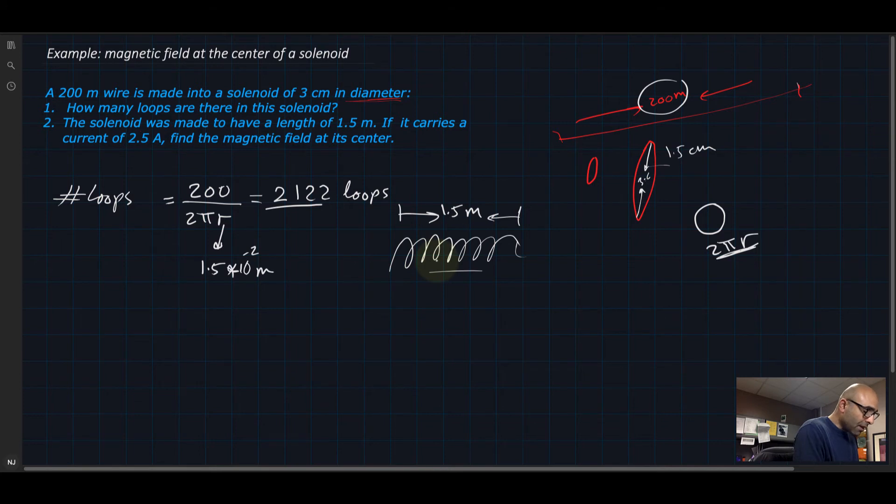We know that the magnetic field for the center of a solenoid is equal to μ₀ times I times n, where n is simply the number of loops divided by the length. Let's plug in the numbers.